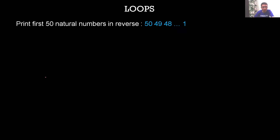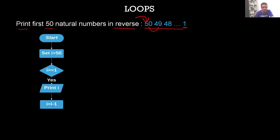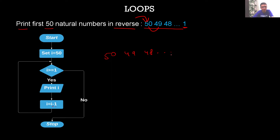Here's another example: print the first 50 natural numbers in reverse. Pause and try to solve it on your own. The solution: initialize i = 50, condition i ≥ 1. If true, print i, then update i = i − 1. So it goes from 50 to 49 to 48 and so on, stopping when the condition becomes false.